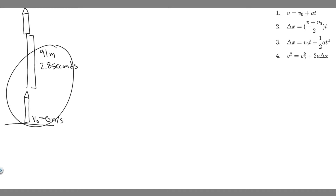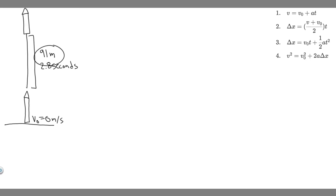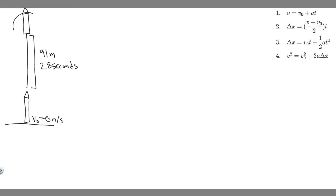So first, we've got to understand what's going on. We have this rocket, and we know the rocket's going to be starting at rest — it's on the launch pad, starts at rest, and then it's going to fly up 91 meters. We know the time it's going to take to go upwards is 2.8 seconds, and then it's going to reach this point and have some velocity, so we're just going to call that V.